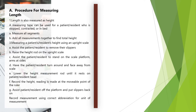Procedure for measuring length: Length is also measured as height. A measuring tape can be used for a patient or resident who is stooped, contracted, or in bed — measure all segments and add them together to find total height. To measure height using an upright scale: assist the patient or resident to remove their slippers, raise the height rod, assist them to stand on the scale platform with arms at sides, have them turn and face away from the scale, lower the height rod until it rests on their head, and record the height. The reading is made at the movable point of the ruler. Assist the patient or resident off the platform and put slippers back on. Record using the correct abbreviation for the unit of measurement.